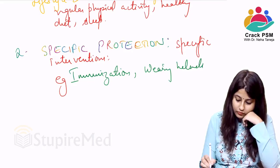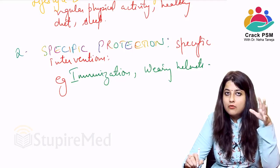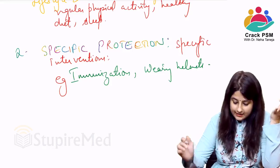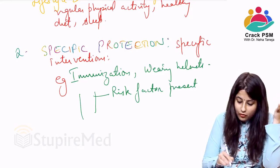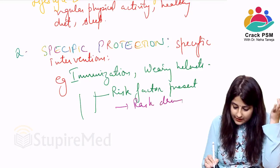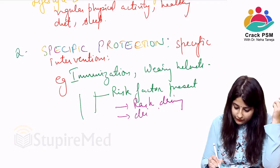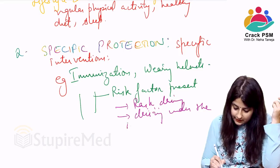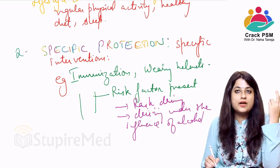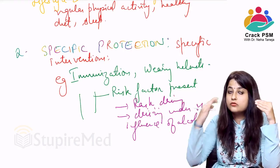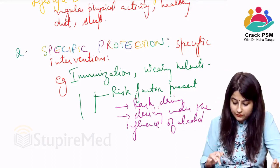Another example of specific protection is wearing helmets on the road. On the road, risk factors for accidents are always present — such as rash driving or people driving under the influence of alcohol. Even though an accident has not yet happened, wearing a helmet protects the person from injury. So this is specific protection, assuming risk factors are already present.